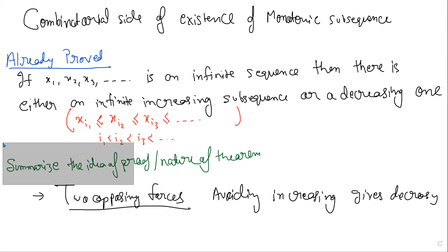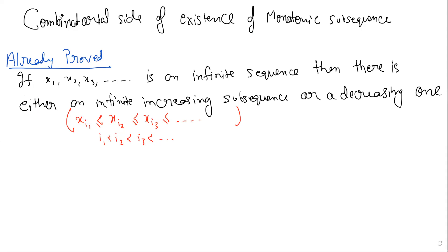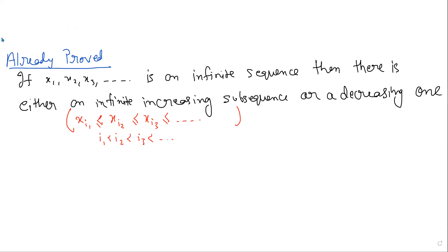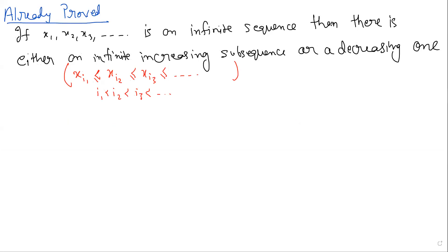Any questions so far? Let's come to the actual question we were looking at last time. This is the qualitative version — it's saying that if you have an infinitely long sequence, then you will have an infinitely long increasing subsequence. Next is a quantitative version. This is rather a qualitative statement. What we are interested in is a quantitative version.